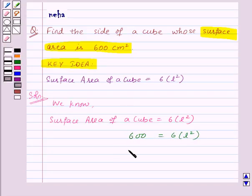Dividing both sides by 6, we will get 600 upon 6 equal to 6 into L square upon 6. So here, 6 and 600 will get cancelled by the common factor 6.